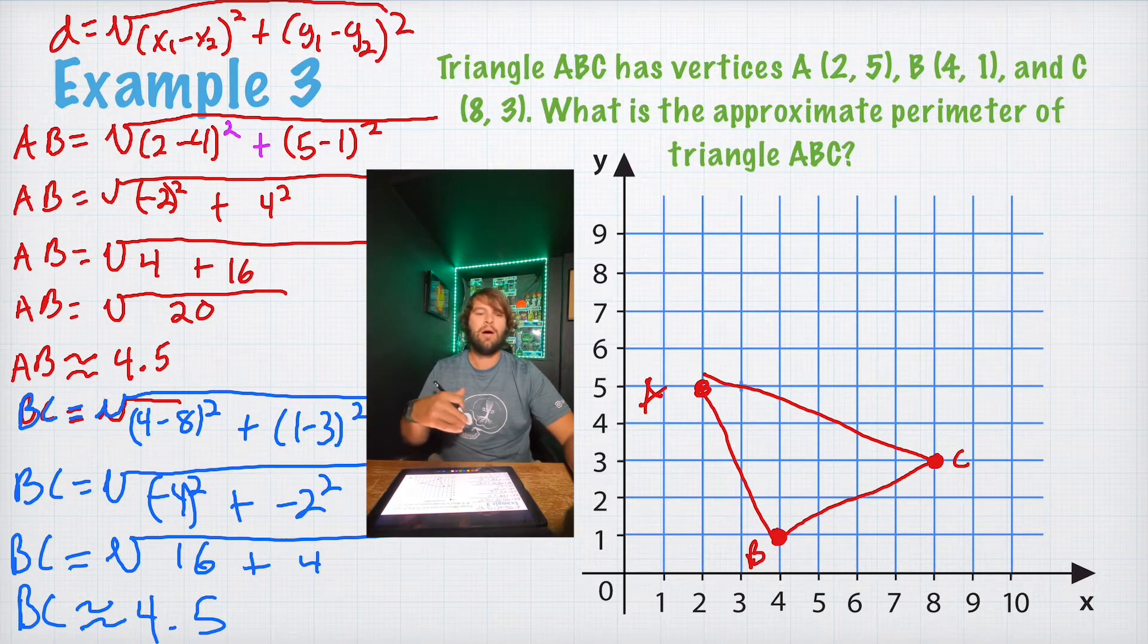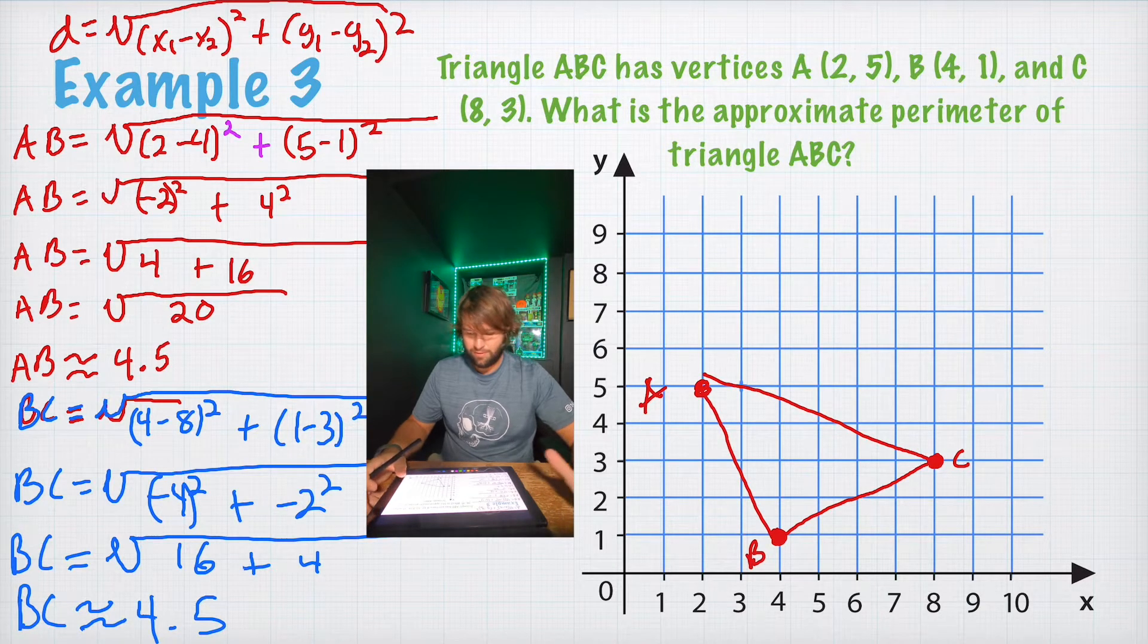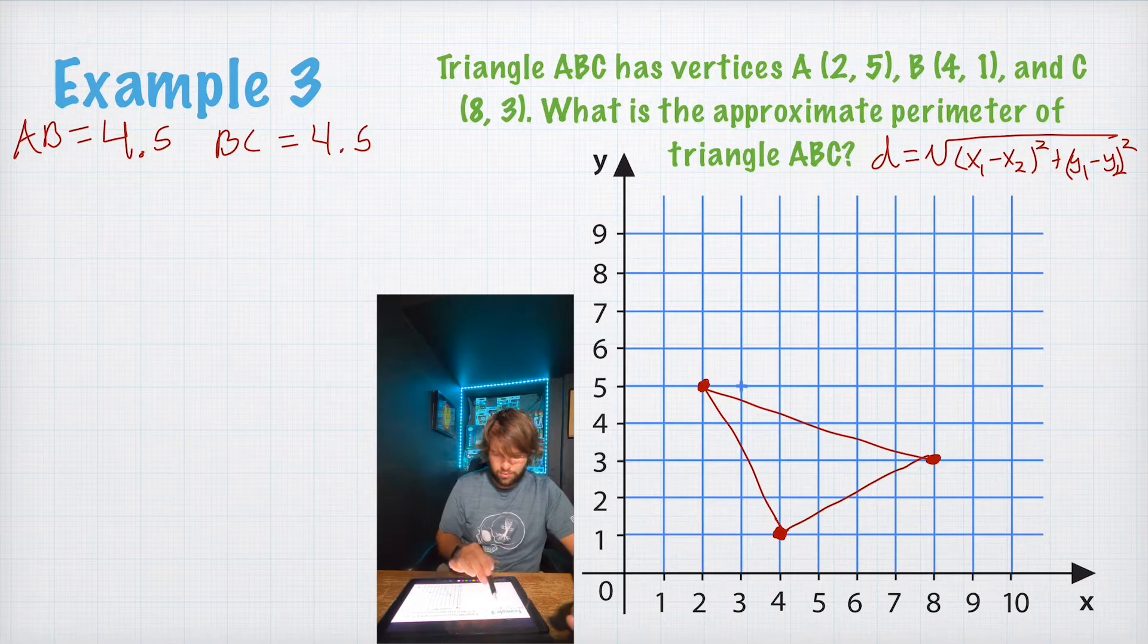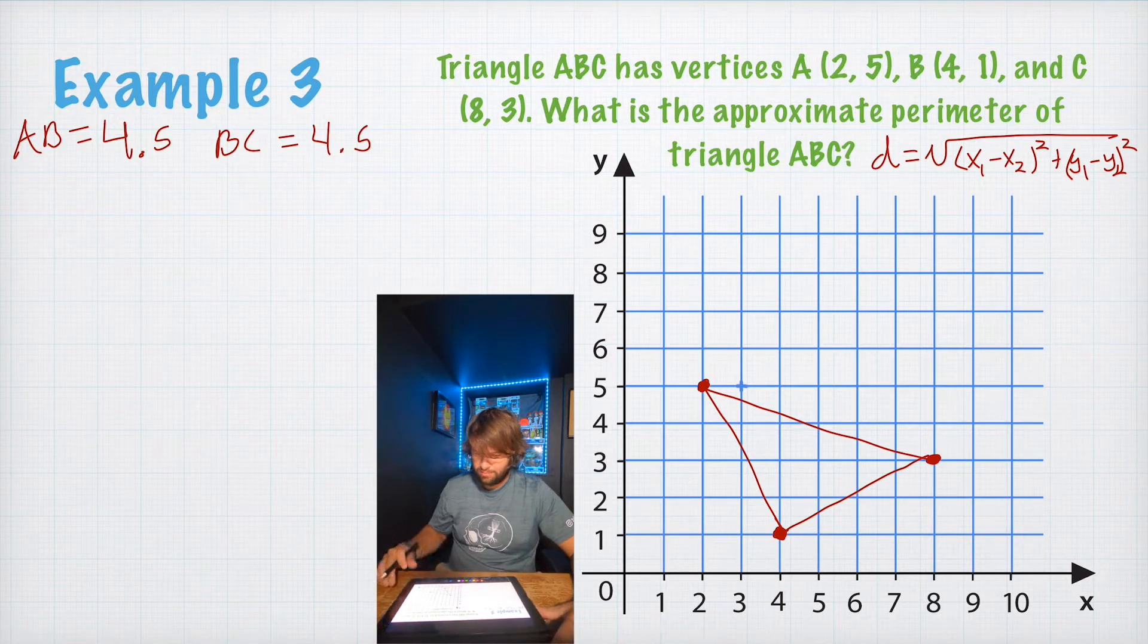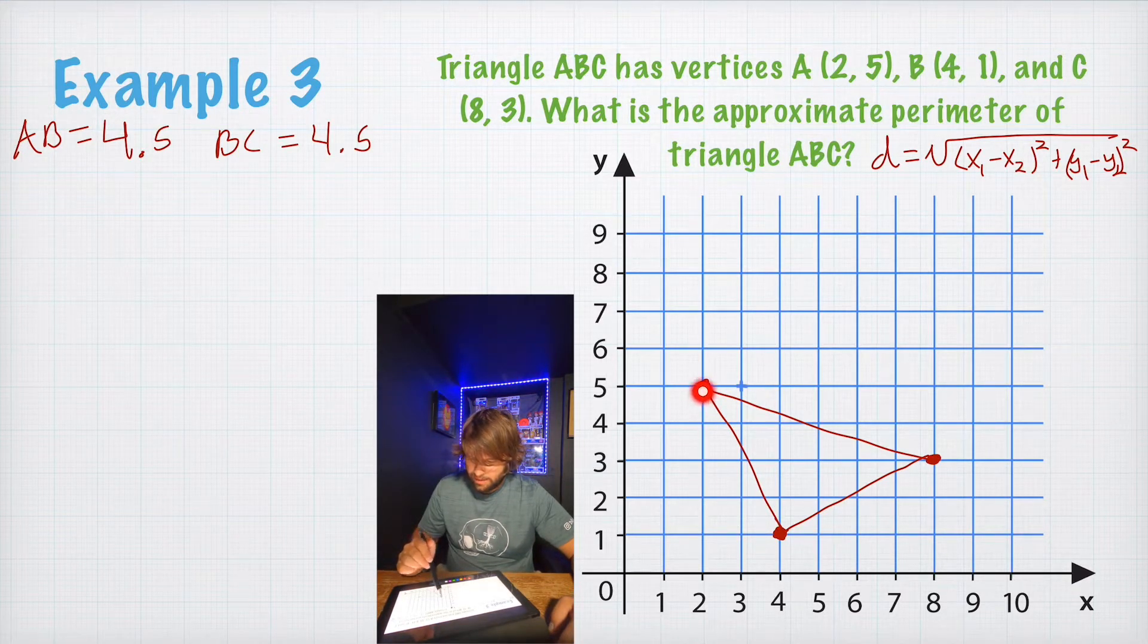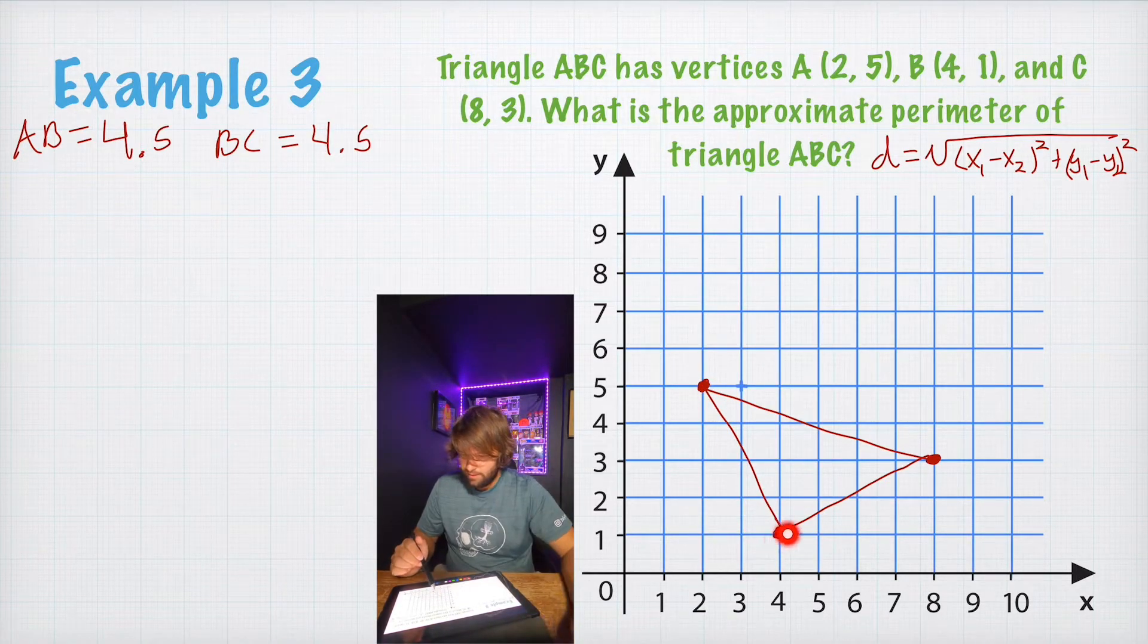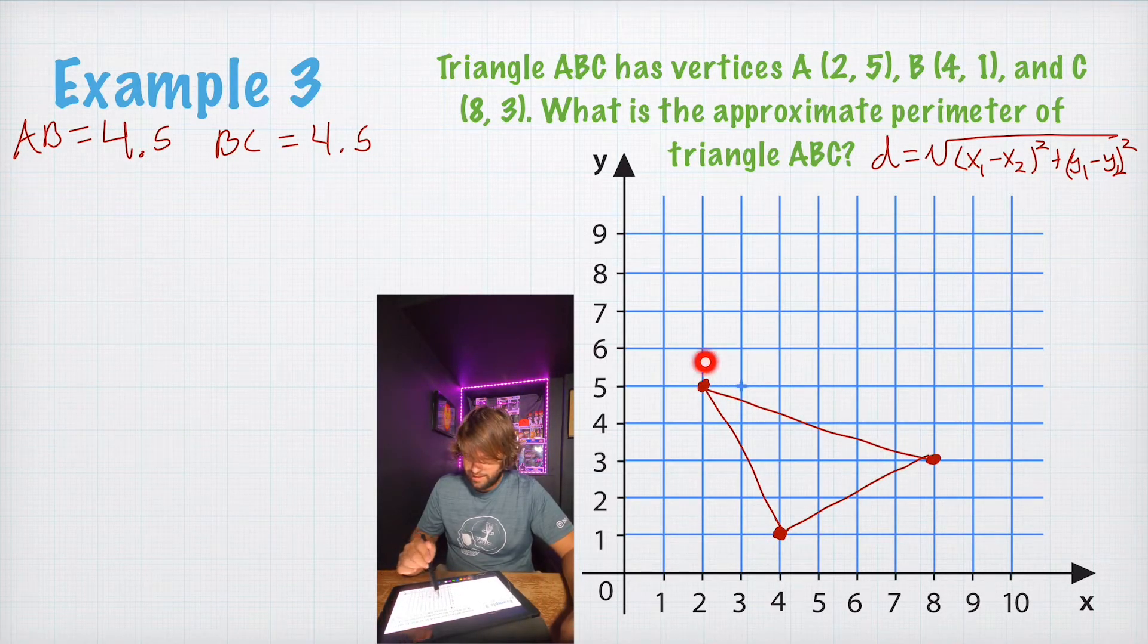I'm out of room on this side. So, we're going to hop on over to the next side and keep going. I have all the important information already saved down. So, we have AB equals 4.5, BC equals 4.5, and our distance formula over here. Now we just have to solve for one more side. We solve for AB, we solve for BC. Now we have to solve for AC.